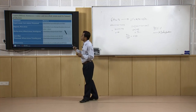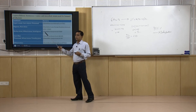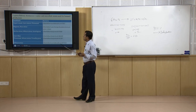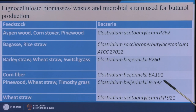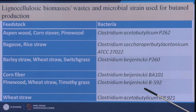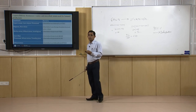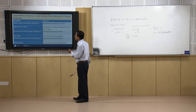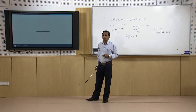This slide presents examples of bacteria and feedstocks used for butanol production through fermentation. Strains reported include Clostridium acetobutylicum P262, C. beijerinckii P260, C. beijerinckii P592, and C. acetobutylicum 921. These strains have recently been reported for butanol production from biomass. Thank you very much for your patience.